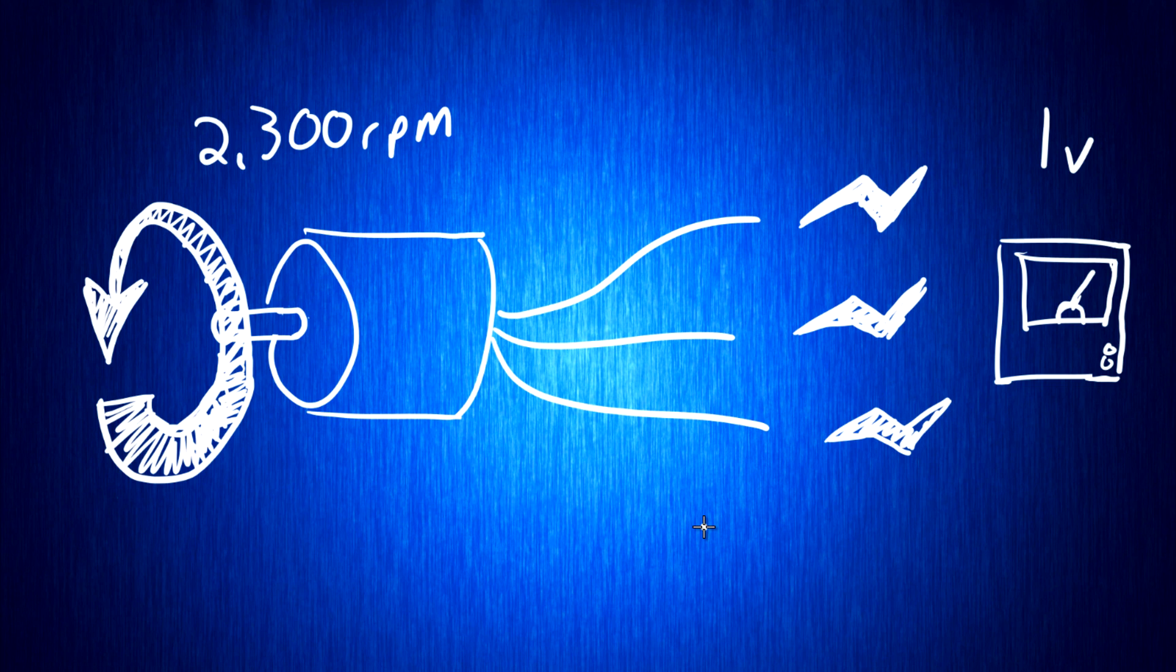If we spin the motor 2300 RPM and we get one volt reading off the thing, that is what gives us a 2300 KV motor. And that stands at any RPM. If we spin this 2300 KV motor at 4600 RPM, we'll get two volts read off the windings.